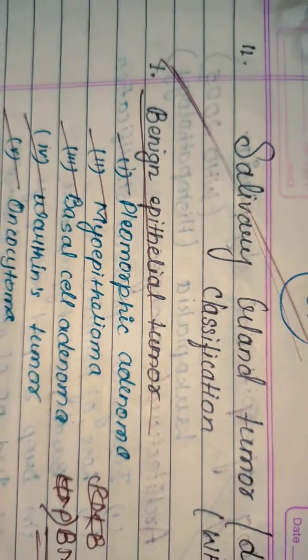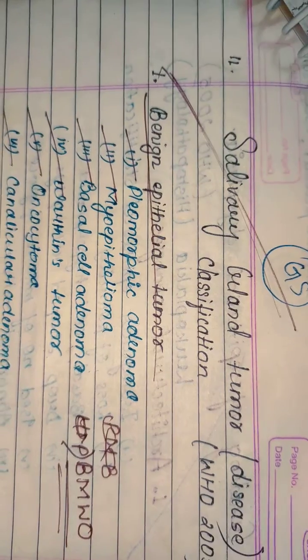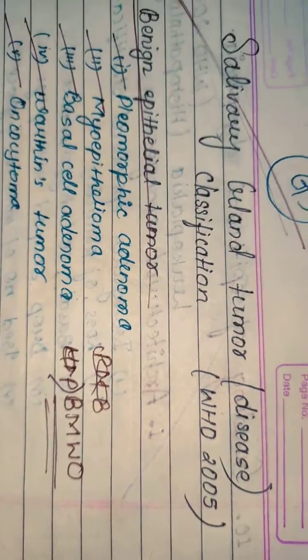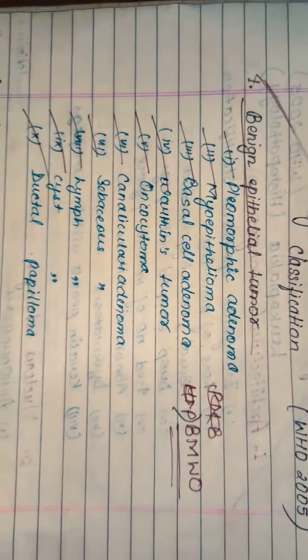First of all, salivary gland tumor. This classification is given by WHO in 2005. The first most important category is benign epithelial tumor.